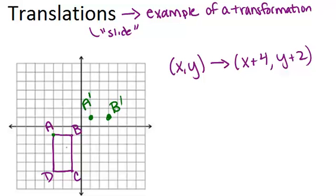So B' will be right here, D' will be here, and C' will be here. So here's our resulting rectangle after the translation.